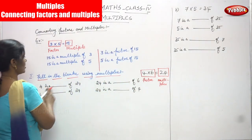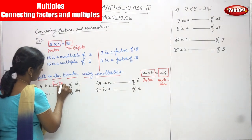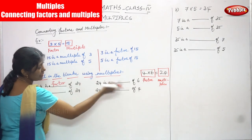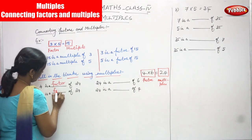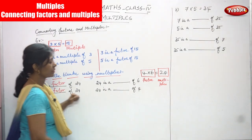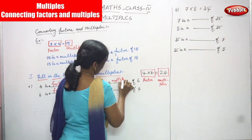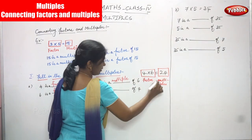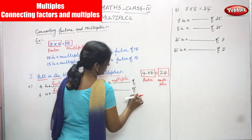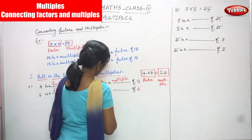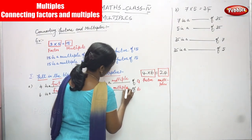So 4 is a factor of 24. Similarly, 6 is a factor of 24. And 24 is a multiple of 6, and 24 is a multiple of 4. You can change the order of 4 or 6 — it does not matter, you get the same answer.